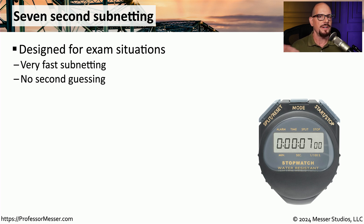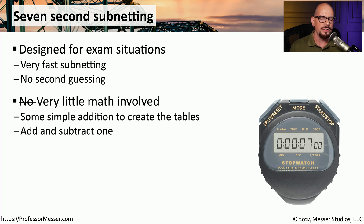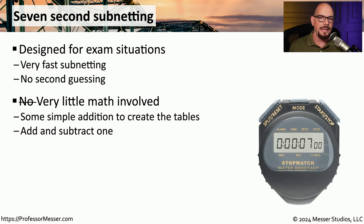This process is very similar in structure to the magic number method, and most shortcuts you find will have some variation of this within them. What's very different about the seven-second subnetting is that there is no math involved. You don't have to perform any calculations to determine a magic number, and everything you need will be predefined in the chart that we create at the very beginning. The only math you end up doing is adding and subtracting one to calculate the first and last IP address.